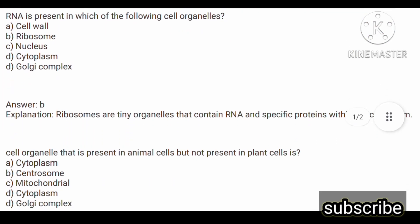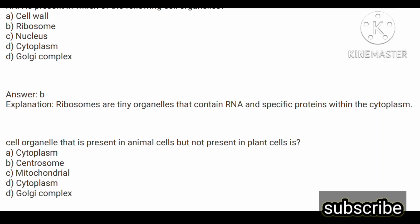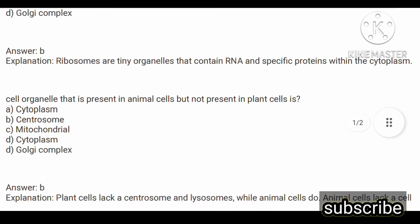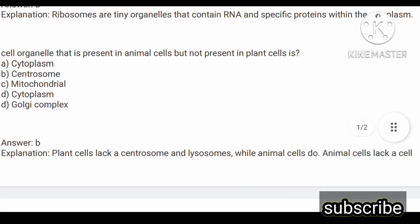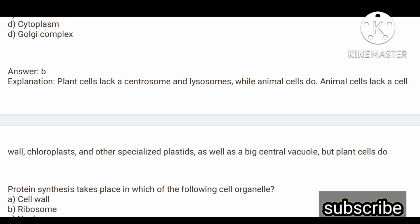Next question: which cell organelle is present in animal cells but not in plant cells? Options are: cytoplasm, centrosome, mitochondria, and Golgi complex. The correct answer is option B, centrosome. Plant cells lack a centrosome and lysosome while animal cells have them. Animal cells also lack a cell wall, chloroplasts and other specialized plastids, as well as a large vacuole.